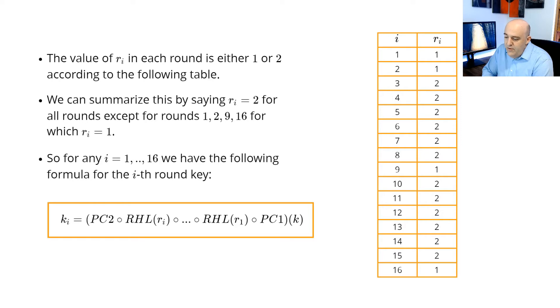So we see that we have a formula for the i-th round key. We take in the original key K, put it into PC1, and then put it into RHL R1 all the way up to RHL R_i. And then, finally, we put it into PC2. And we get a 48-bit round key back.